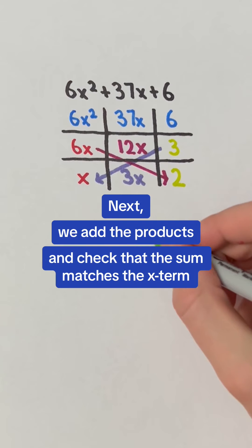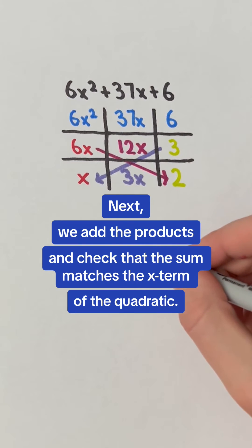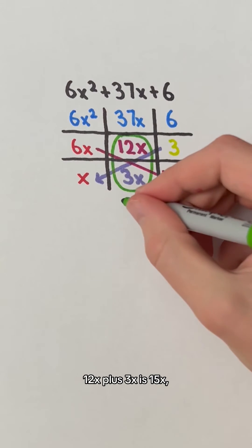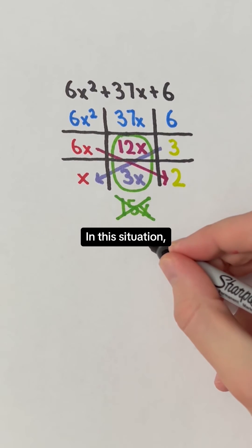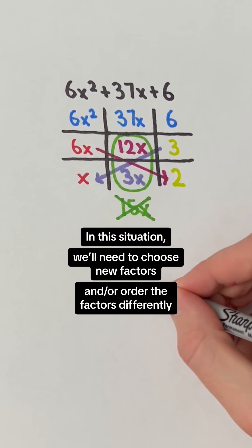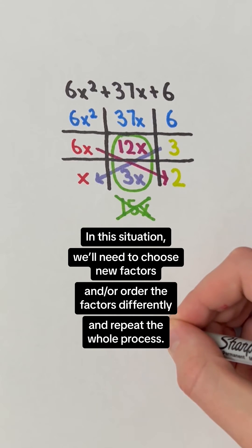Next, we add the products and check that the sum matches the x term of the quadratic. 12x plus 3x is 15x, which is not 37x. In this situation, we will need to choose new factors and or order the factors differently and repeat the whole process.